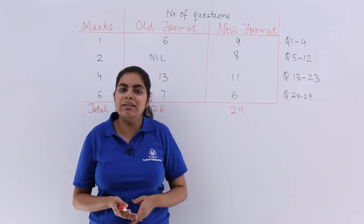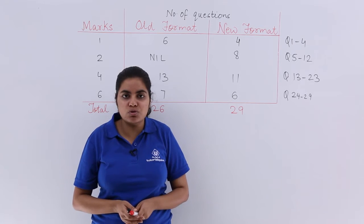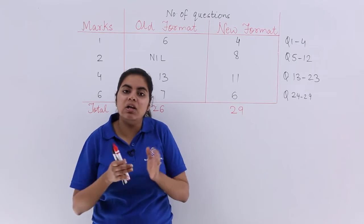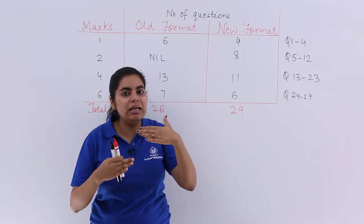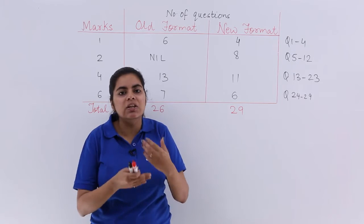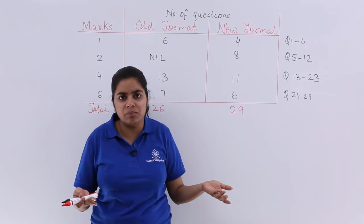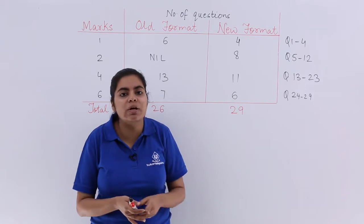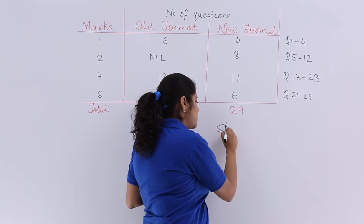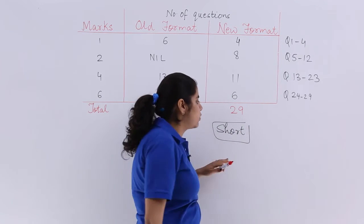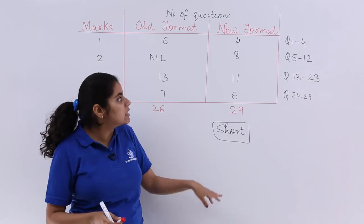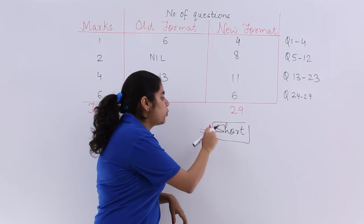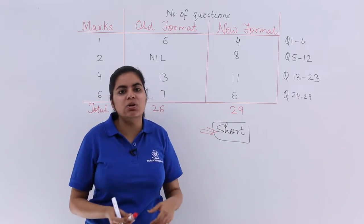Now one important thing that I need to tell you is that earlier what students used to do, they used to focus only on one line questions for one mark and long questions for four and six. The intermediate length questions they used to just ignore because that will not come. In four mark you will have lengthy questions, in six mark you will have lengthy questions, in one mark you will have very short questions. So the short questions technically the student used to leave because that will not come in the question paper. But this time you have two markers also. So you have to focus on the short questions also because that is also very much needed.